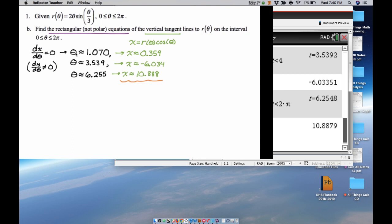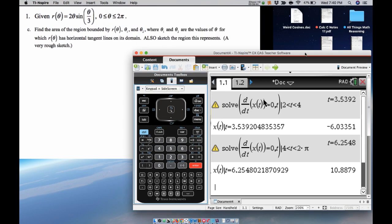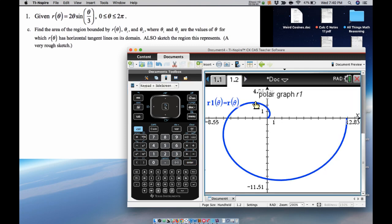Let's do part c of this question. For part c, we want to find the area of the region bounded by r(θ), θ₁, θ₂, where θ₁ and θ₂ are the values of theta for which r(θ) has horizontal tangent lines on its domain, from 0 to 2π. Also sketch the region this represents. So horizontal tangent line, so I think there's a horizontal tangent line like here and down here, so I'm going to try to find that area.